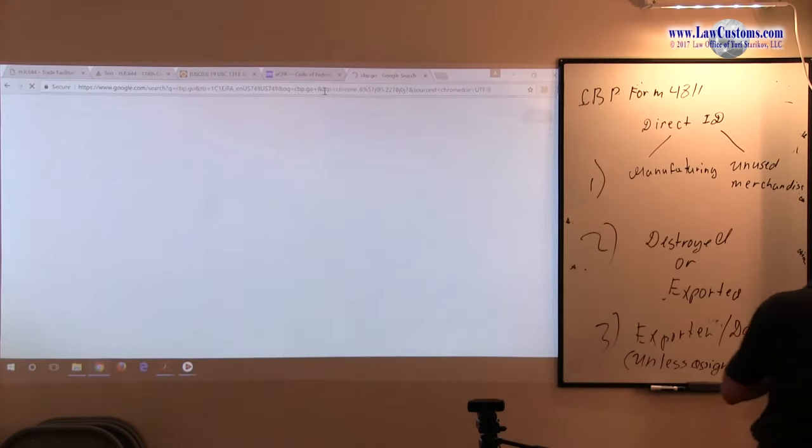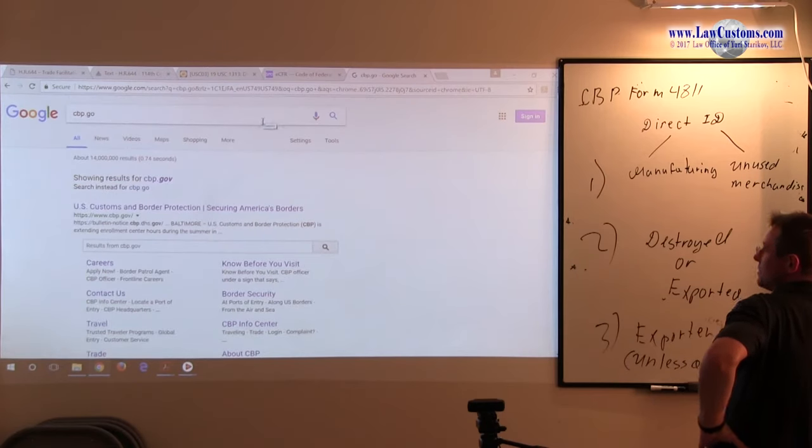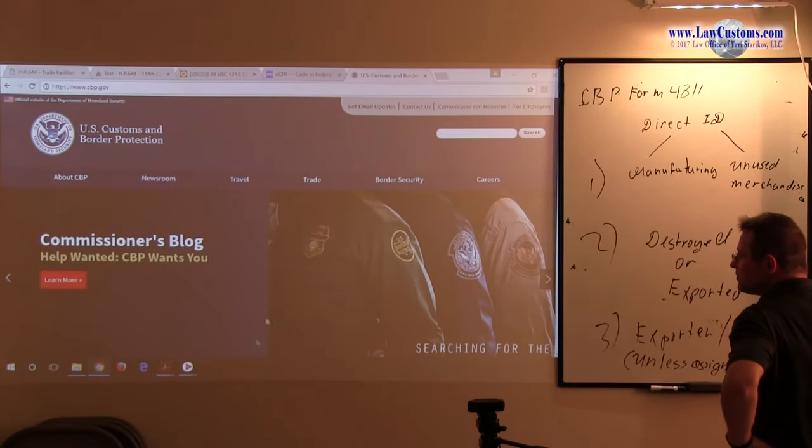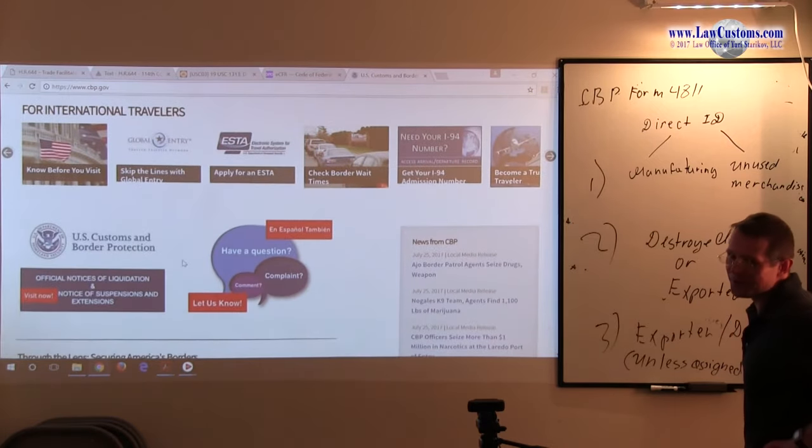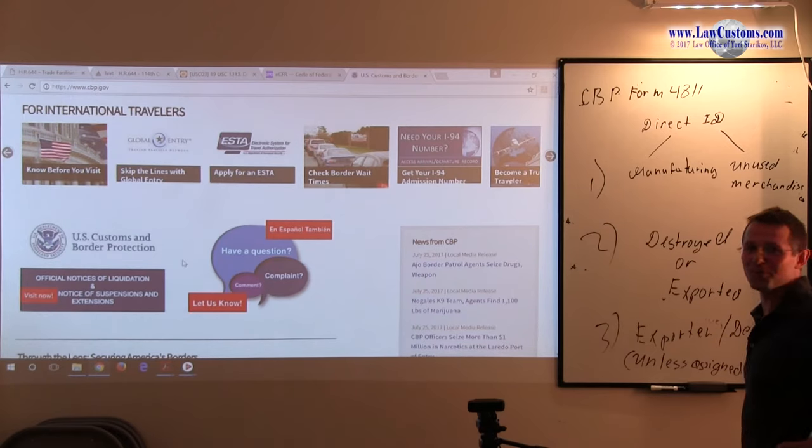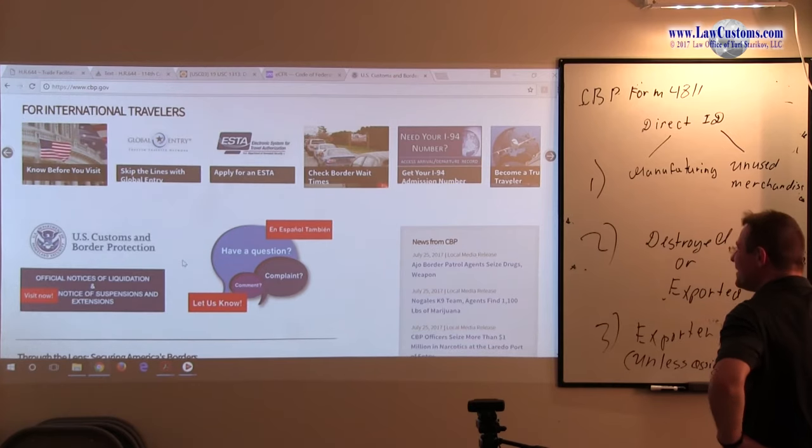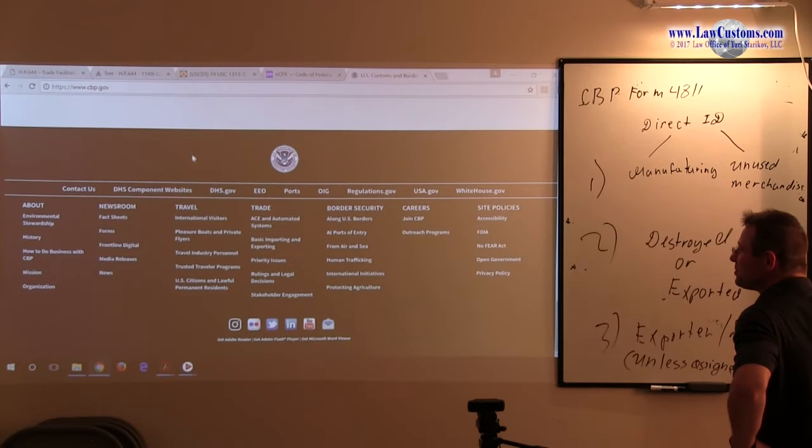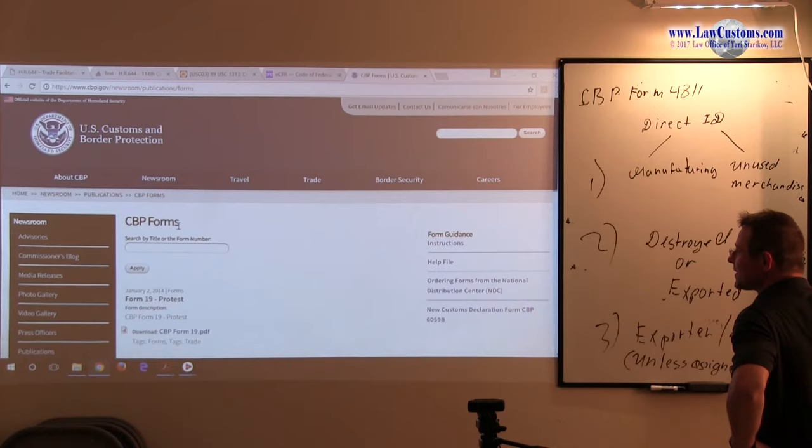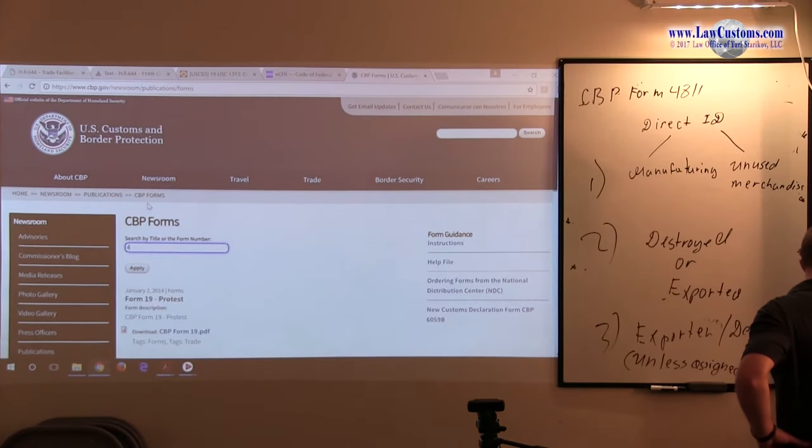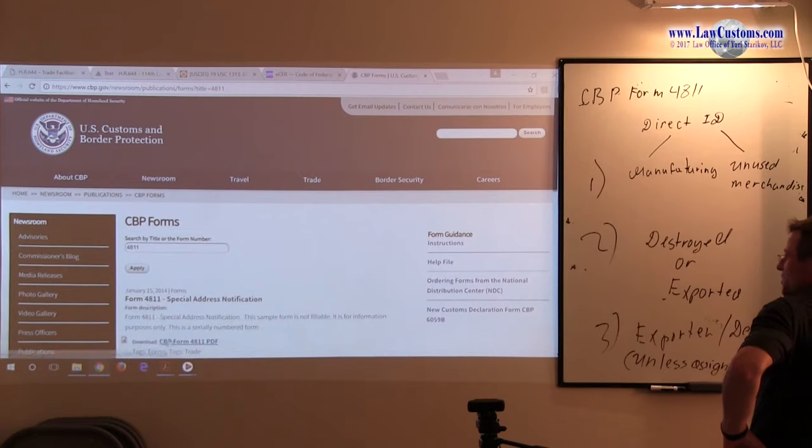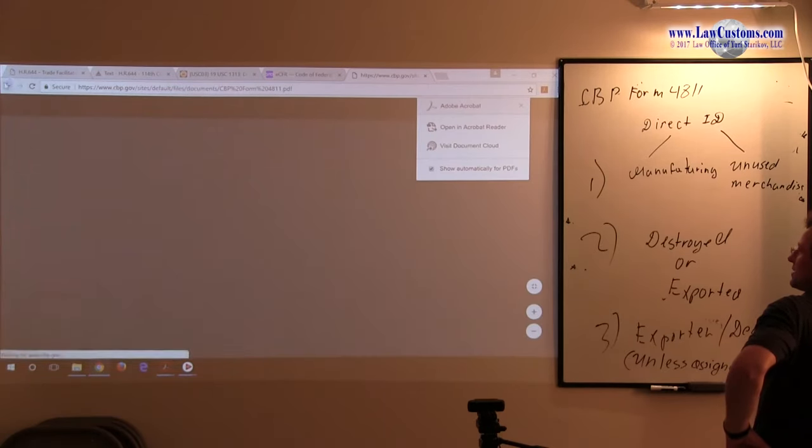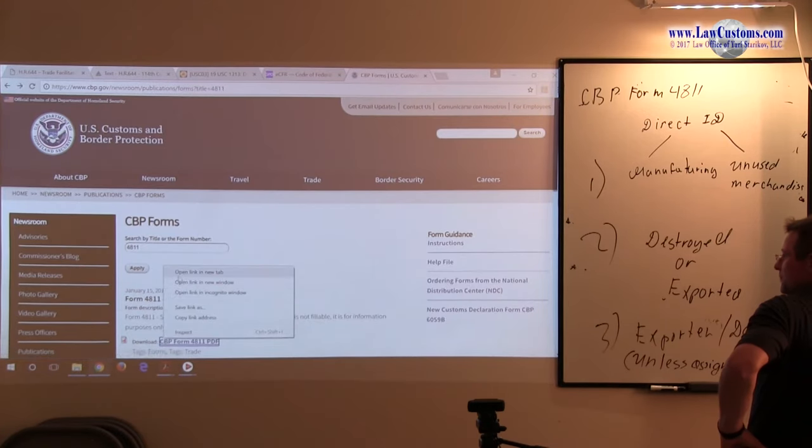Since we're preparing and everyone has internet access, we'll go to cbp.gov. Customs and Border Protection has a section for forms at the bottom. One way to do it is just type 4811 and see what it is. So 4811 is for special address information. Let me open it up in a new tab.